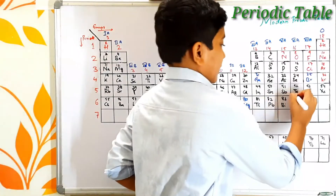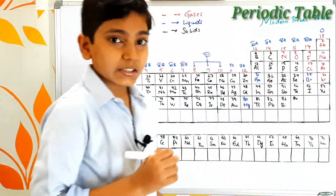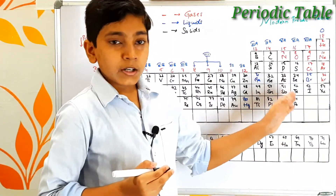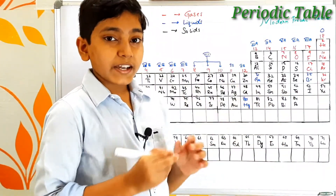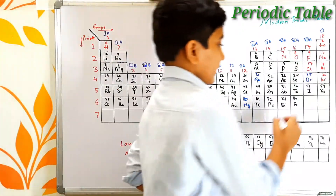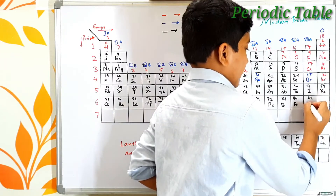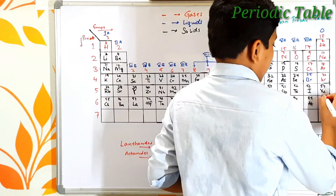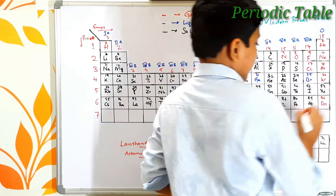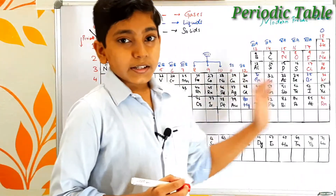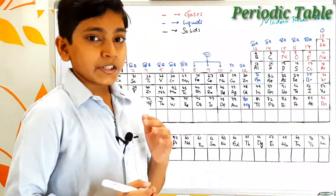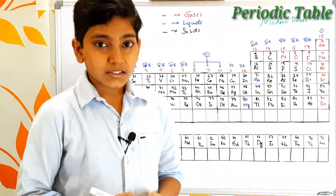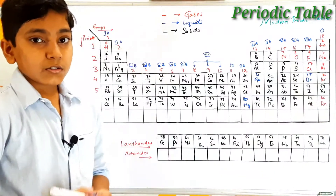Atomic number 84 is polonium — symbol Po. From polonium until element 118, we find a total of radioactive elements. Atomic number 85 is astatine — its symbol is At. Atomic number 86 is radon — its symbol is Rn, and it is one of the two noble gases not found in the atmosphere, the other being oganesson.